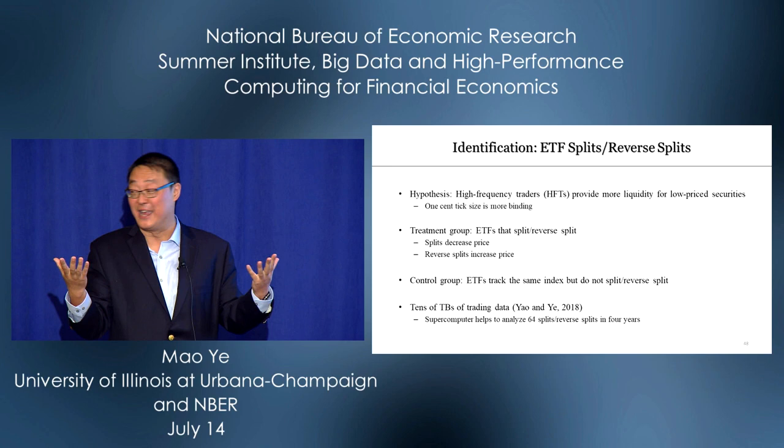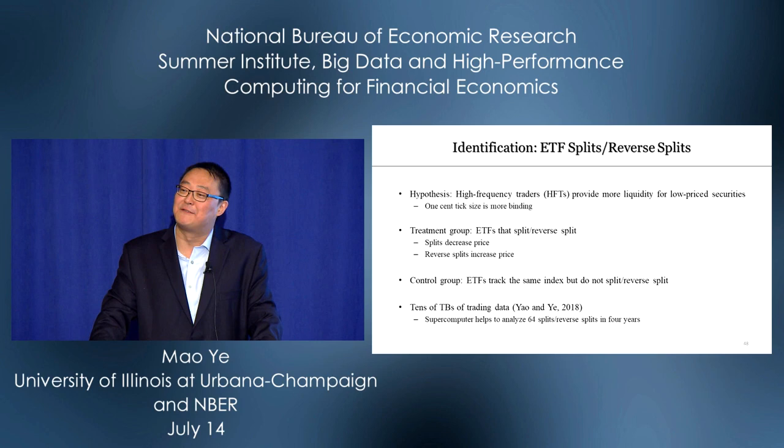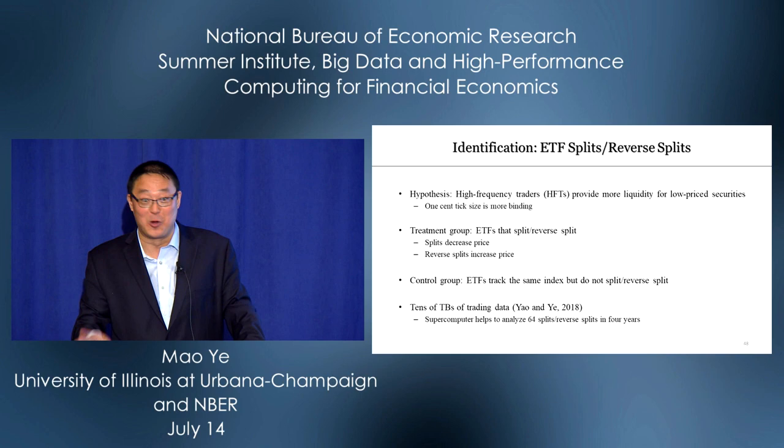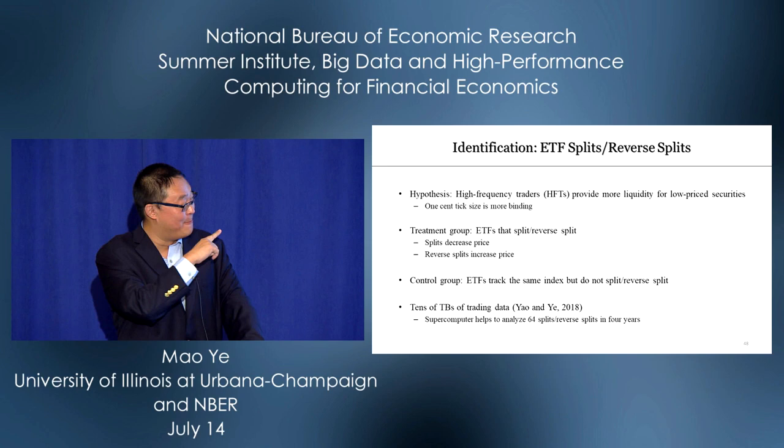Why does this become a big data problem? Because ETF splits are rare. We need to go through four years of data to find 64 splits and reverse splits — tens of terabytes of data, because each day is large. You need to search four years to make this mechanism work. It's a big data project.